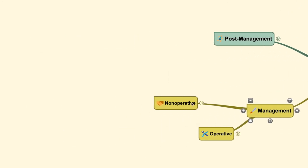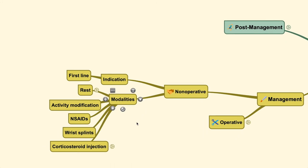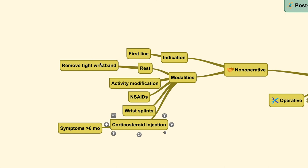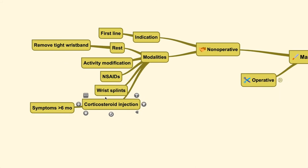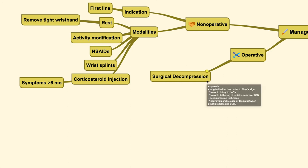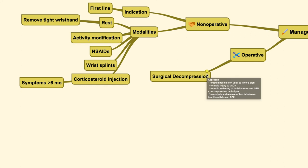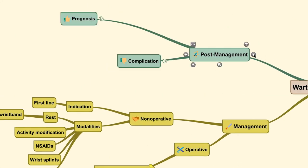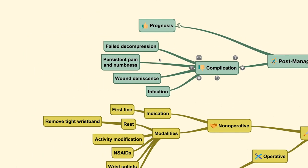Wartenberg syndrome is also considered a disease that can be treated non-operatively. Mostly you need to just remove anything that is tight, and in many cases the cause is usually a tight wristband. Activity modification, NSAIDs, wrist splinting, or steroid injections may also be given if the symptom persists for a very long time. Surgical decompression is possible, but you need to avoid injuries in those areas, which are very close to the lateral tubercle. You also need to avoid tethering of the cutaneous nerve, and if not careful, you may cut through this nerve. You also need to avoid tethering of your incision scar to the nerve, or else the symptoms will recur.